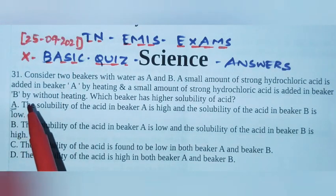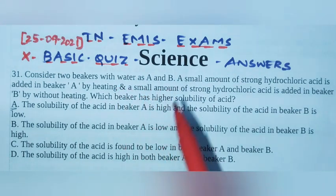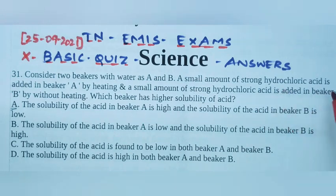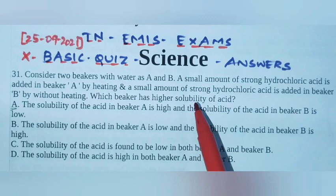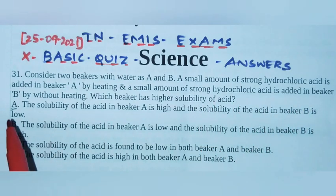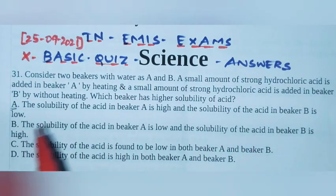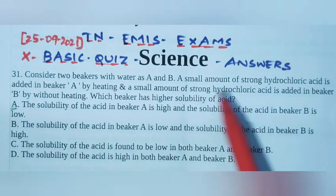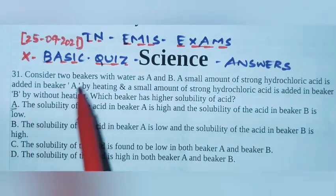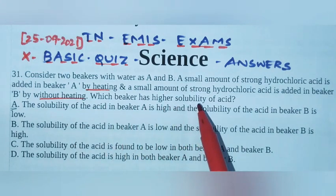31st one. Consider two beakers with water as A and B. A small amount of strong hydrochloric acid is added in beaker A by heating, and a small amount of strong hydrochloric acid is added in beaker B without heating. So the difference is beaker A with heating, B without heating.